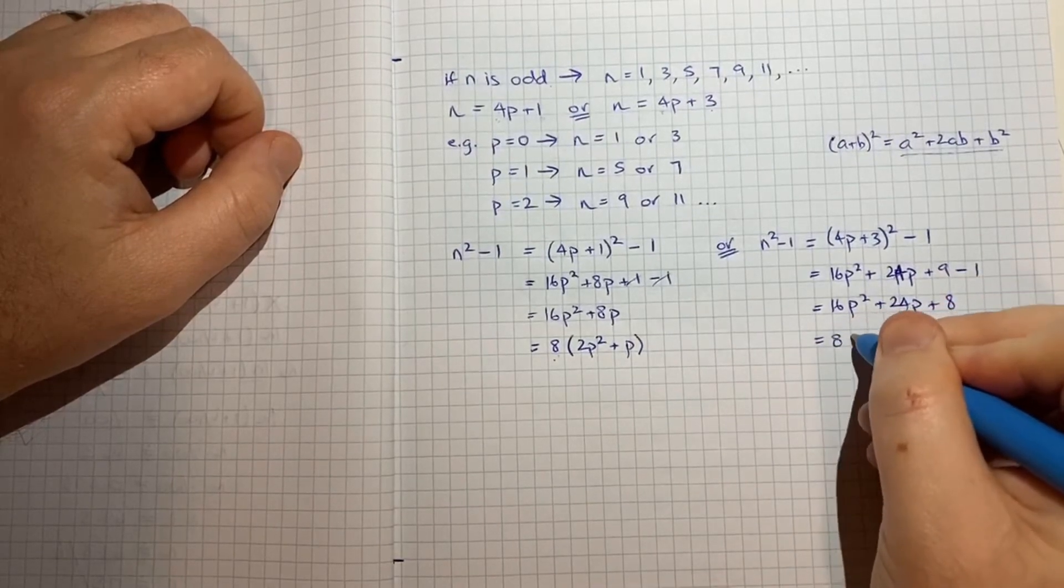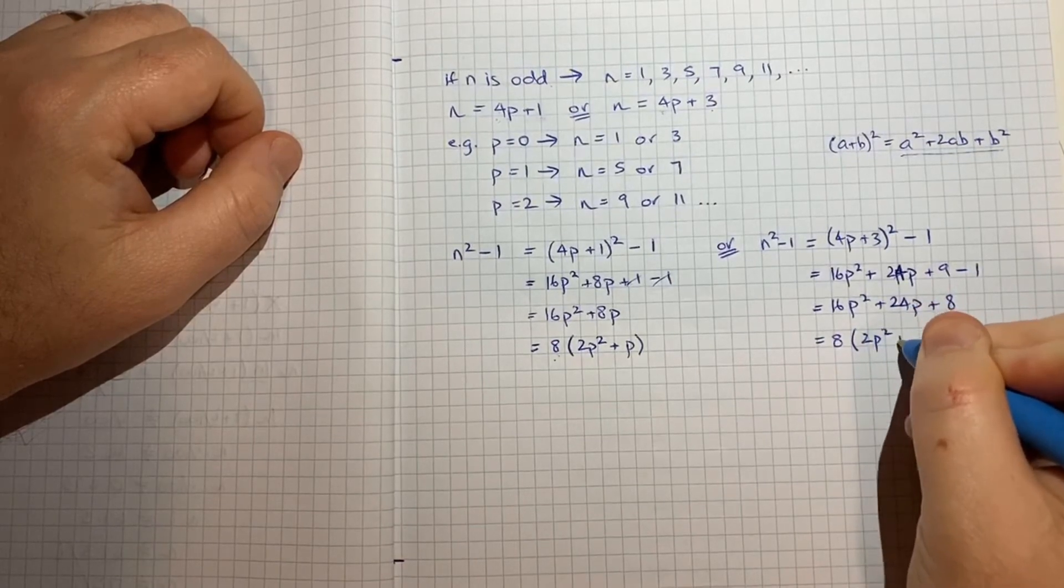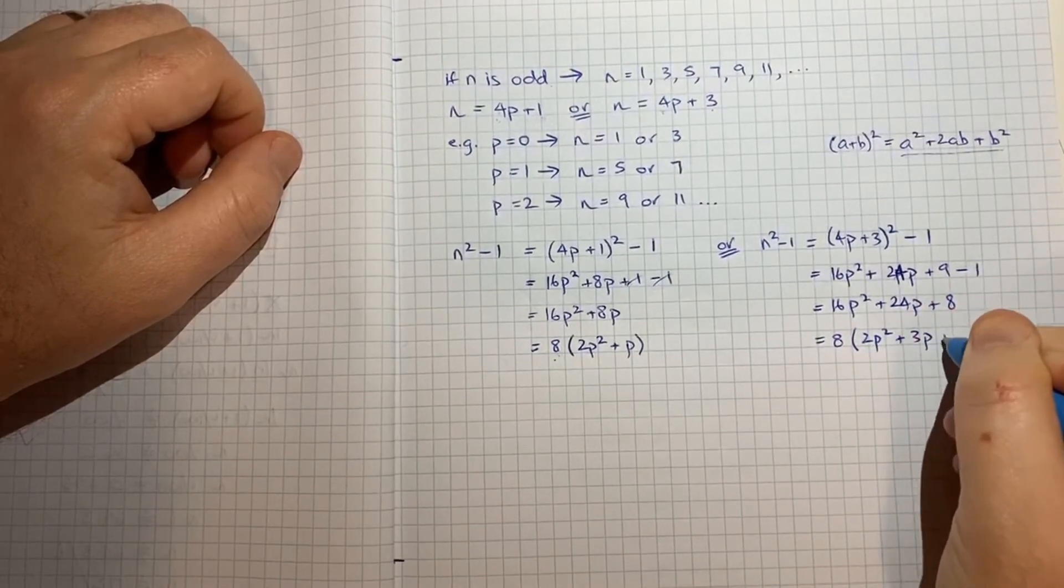And again I'll just bring out the 8 and so we'll get 2p squared plus 3p plus 1.